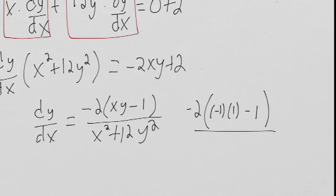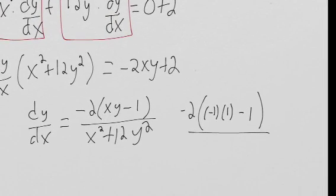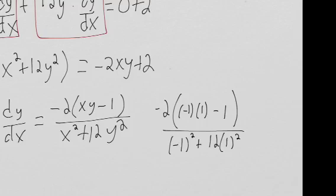And that's divided by (-1)² plus 12 times (1)². So then we have -1 times 1 is -1, minus 1 is -2, times -2 is -4.